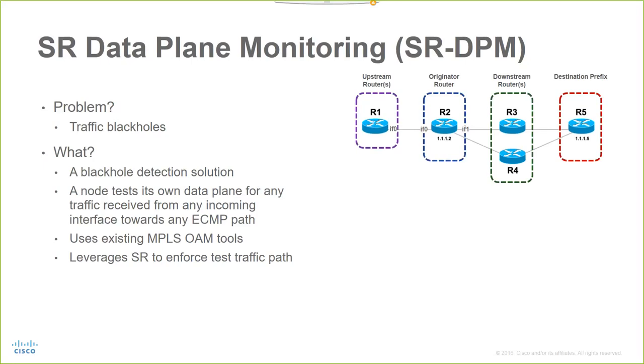Let's consider the example where router 2 is a DPM-enabled node that generates test traffic to monitor the LSP towards the prefix seed of router 5. The test traffic is transmitted on the interface towards its upstream neighbor, router 1, with an MPLS stack of two labels.